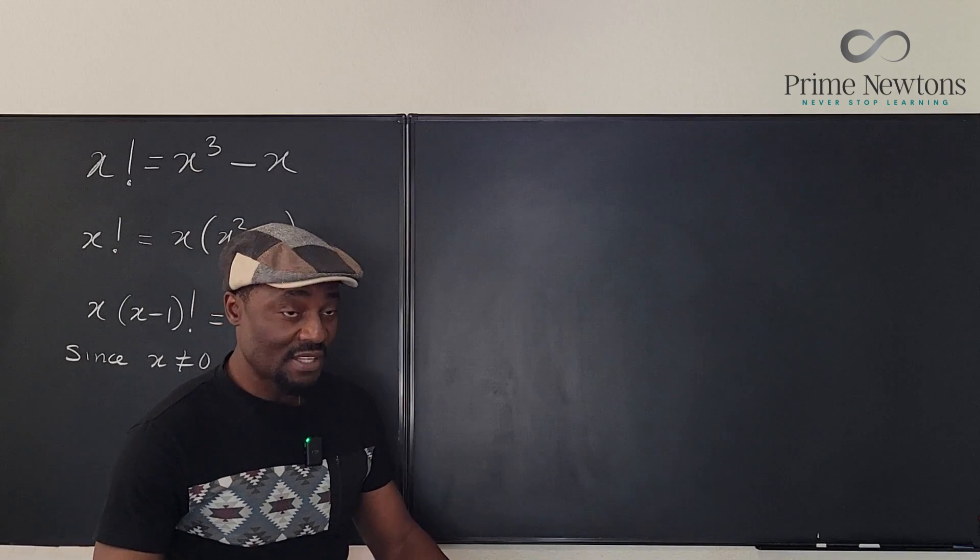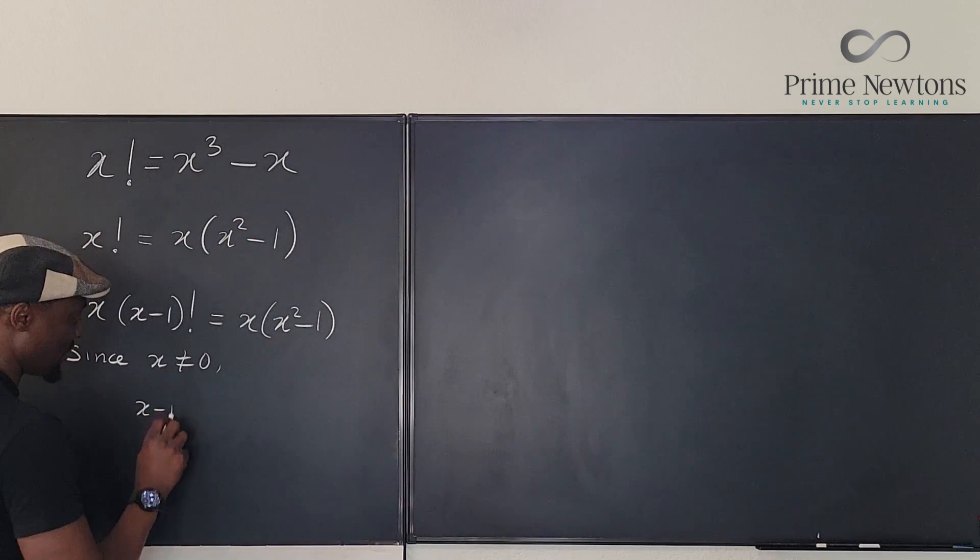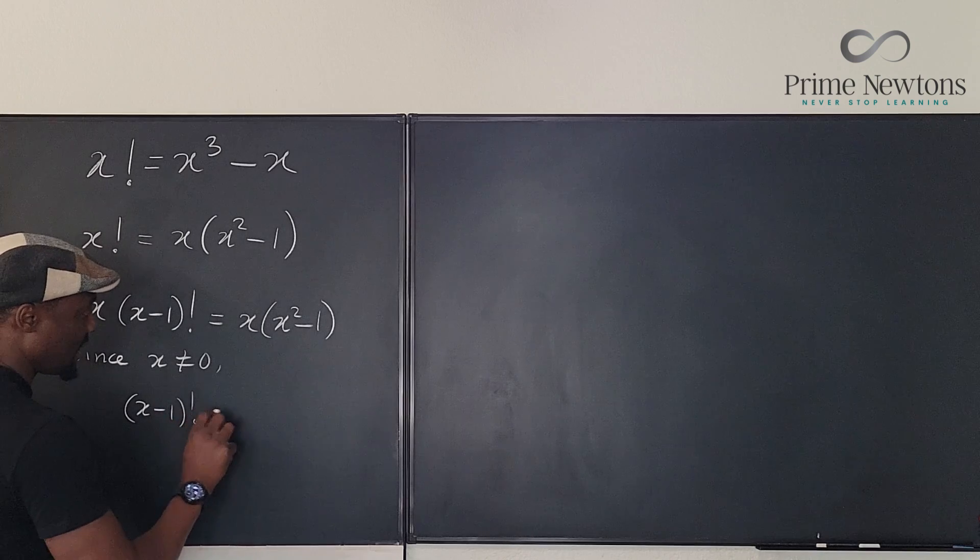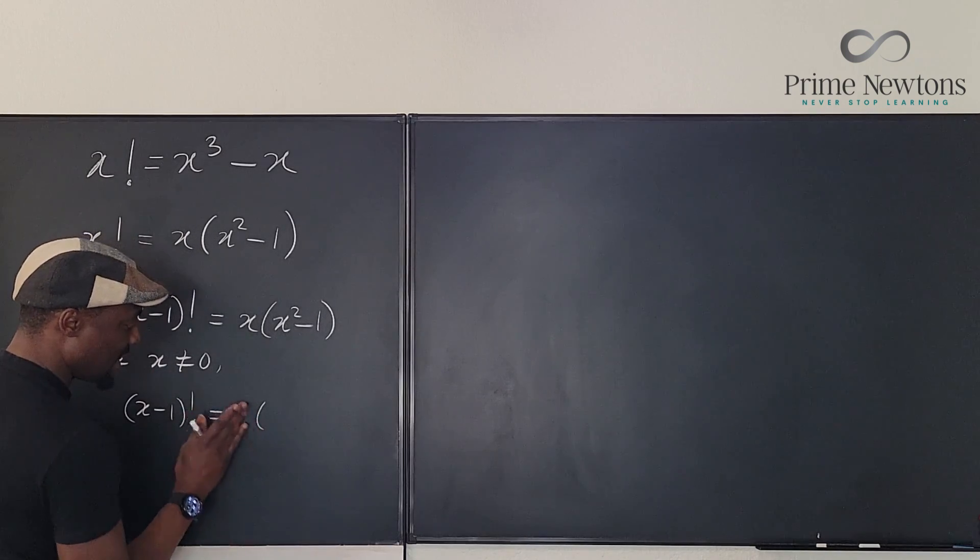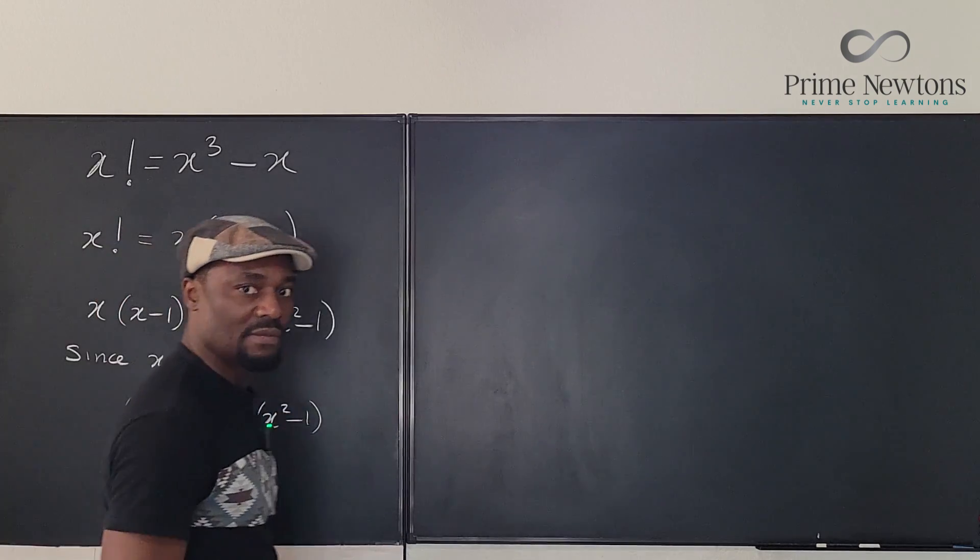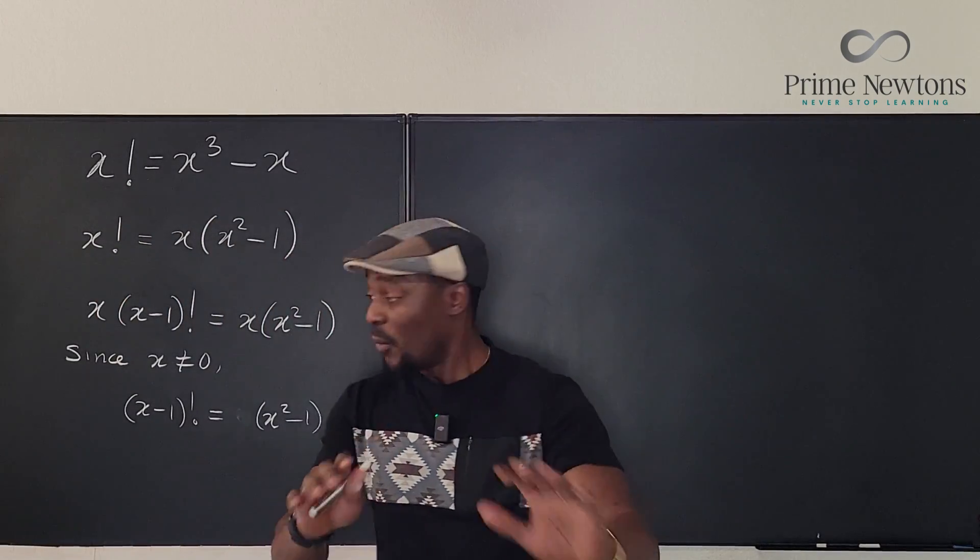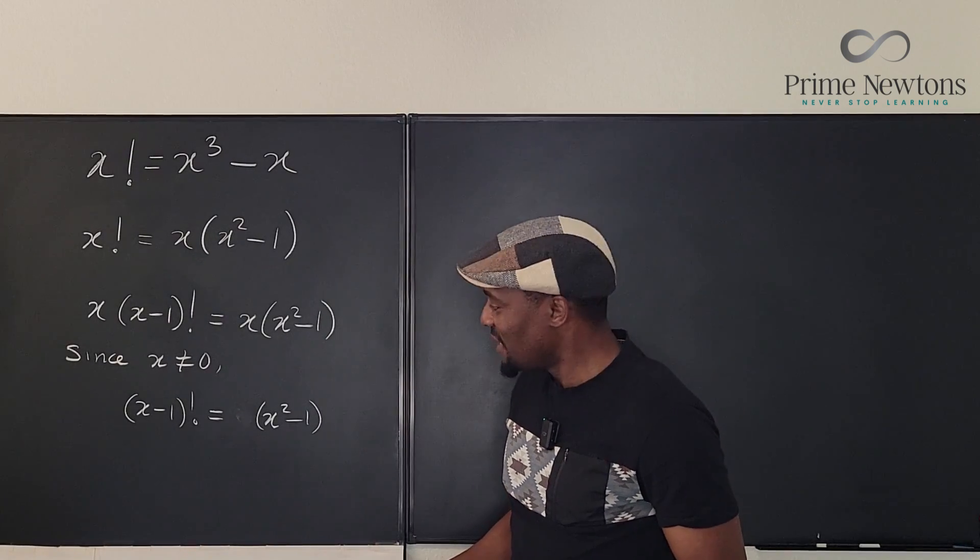Since x is not 0, we can divide both sides by x. So we have x minus 1 factorial is equal to, this is gone, it's just basically x squared minus 1. That's what we have. Now, with what we have here, we're going to try to see if we can further simplify.